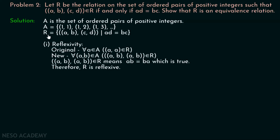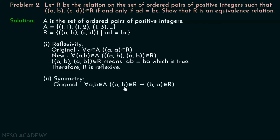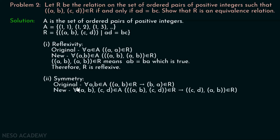Now let's see whether this relation is symmetric or not. The original definition of symmetry says: for all A, B belonging to set A, if (A, B) belongs to R then (B, A) belongs to R. The new definition becomes: for all (A, B), (C, D) belonging to set A, if ((A, B), (C, D)) belongs to R then ((C, D), (A, B)) belongs to R. What is the meaning of ((A, B), (C, D)) belonging to R? This means AD equals BC.